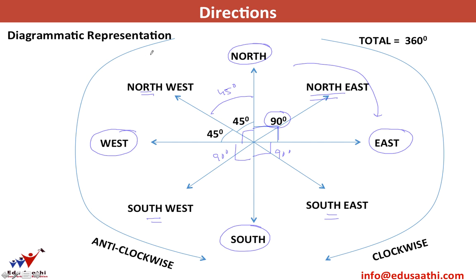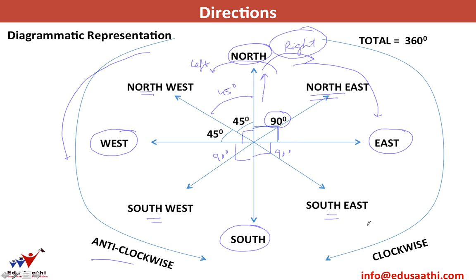Moving anticlockwise means moving towards the left. If you are walking towards the North and take an anticlockwise turn, you are turning to your left. Taking a clockwise turn means turning to the right. So turning right and clockwise mean the same thing, and turning left and anticlockwise also mean the same.